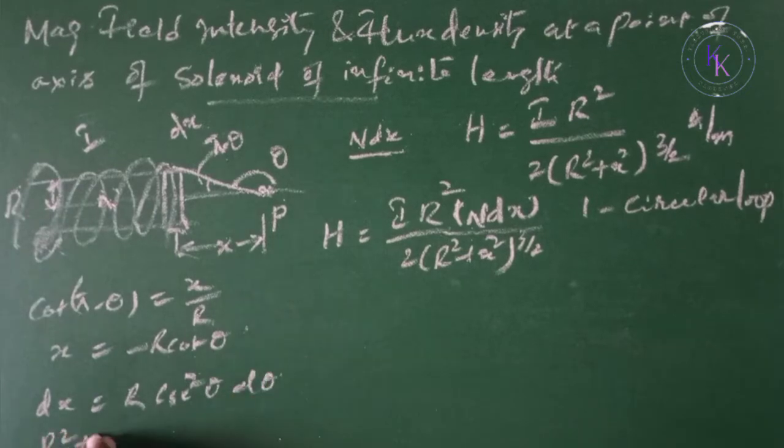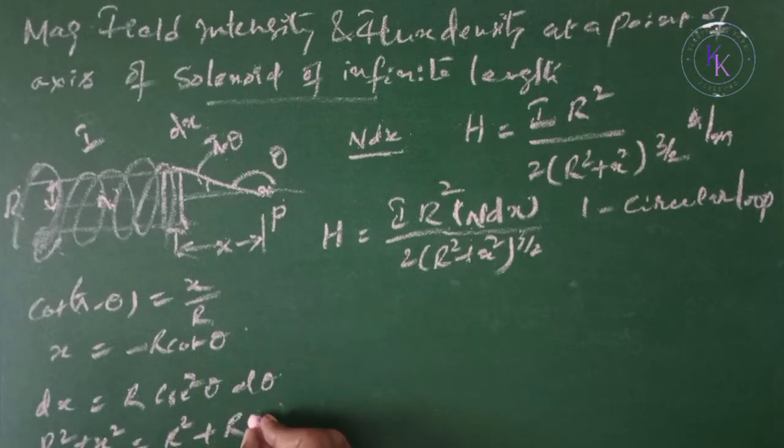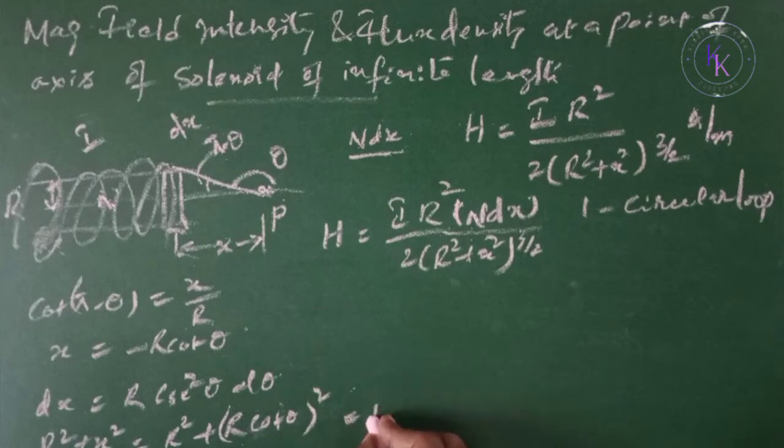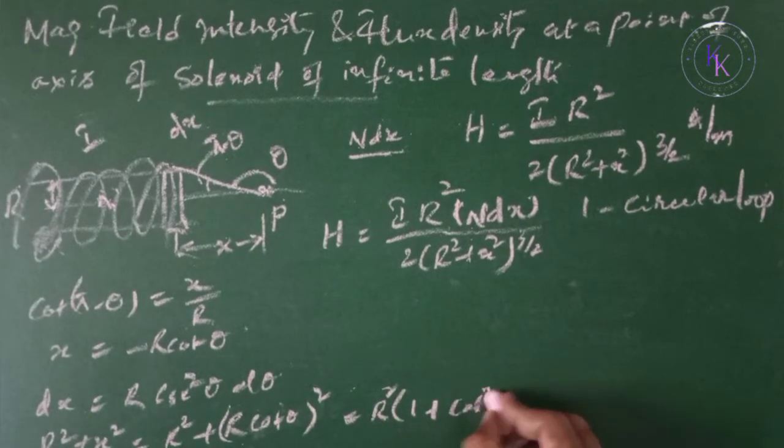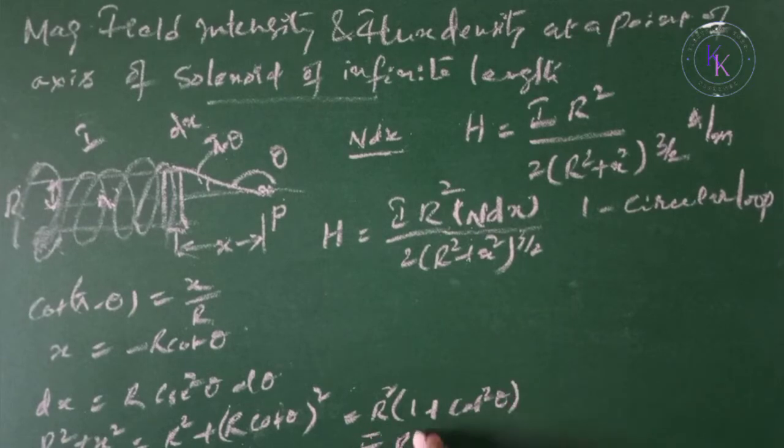R squared plus x squared equals to R squared plus R squared cot squared theta. Taking R squared common, 1 plus cot squared theta, which is cosecant squared theta. Now substitute these values.